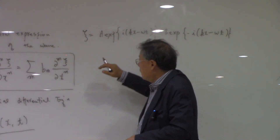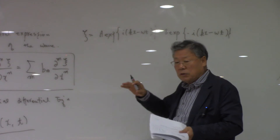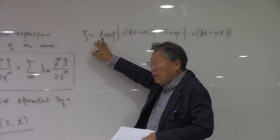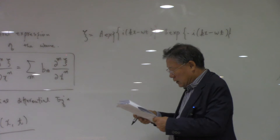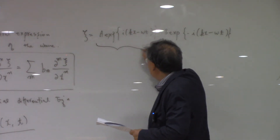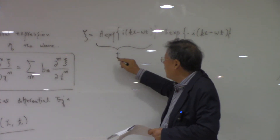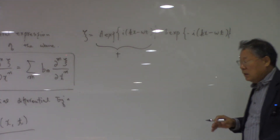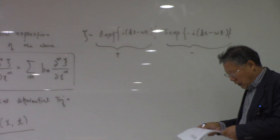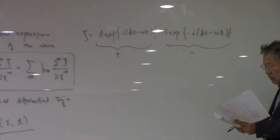The general solution of this wave equation is: ψ = A·exp(i(kx − ωt)) + B·exp(−i(kx − ωt)). With boundary conditions you can specify the values of A and B. The first term is a wave propagating in the positive direction, and the second term is a wave in the negative direction.